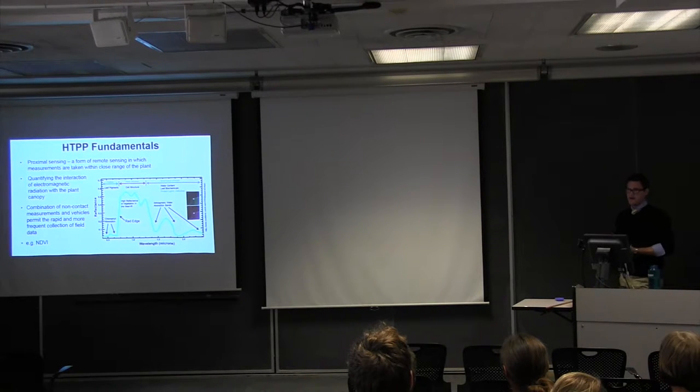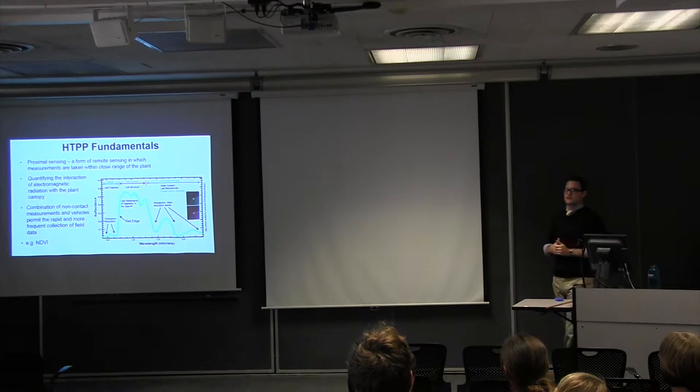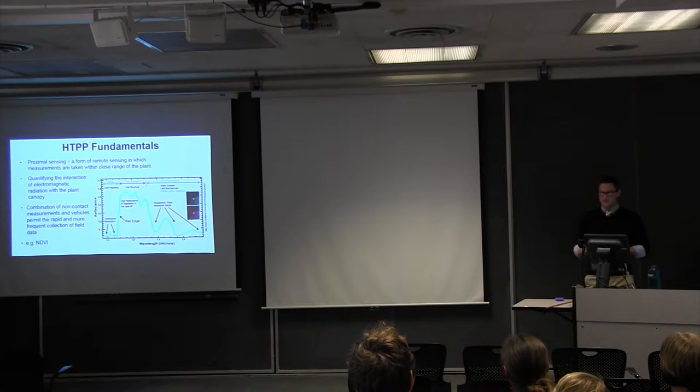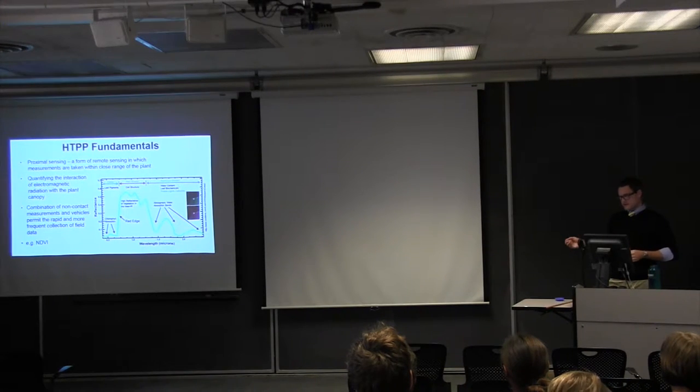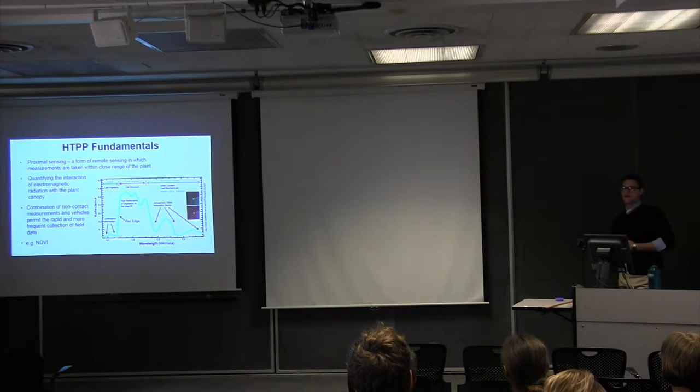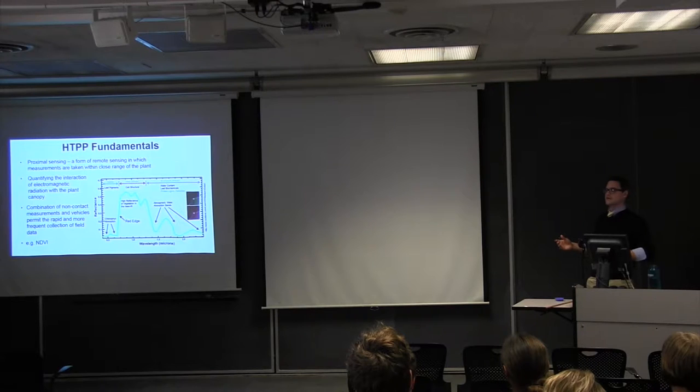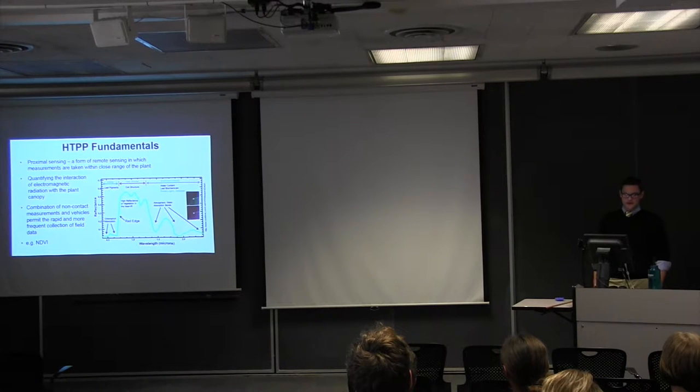So kind of the fundamentals. Basically, we're relying on proximal sensing, which is an applied form of remote sensing. Basically, it's just we're taking these measurements in close proximity to the plant using cameras. You've heard of multispectral, hyperspectral, regular RGB cameras. And basically, what we're trying to do is quantify the interaction of the electromagnetic radiation with the plant canopy. And so on the right-hand side, you see a figure that I'm sure most of you are aware of. Basically, the reflectance of the different wavelengths that a plant reflects back. And so it's this combination of non-contact measurements in vehicles that permit the rapid and frequent collection of data throughout the season. And so for most of us, you're probably aware of normalized different vegetation index. This is a classic high-throughput phenotyping technique that's used.